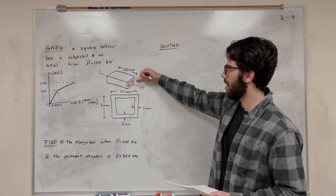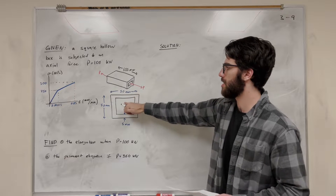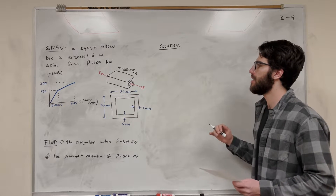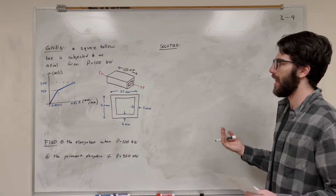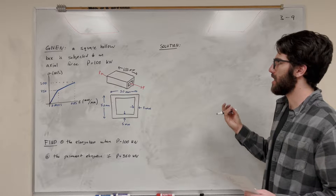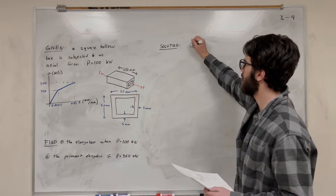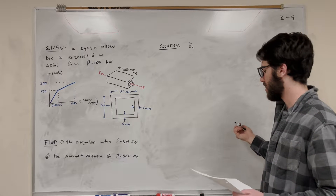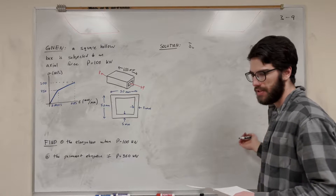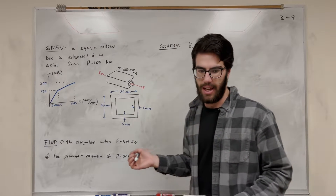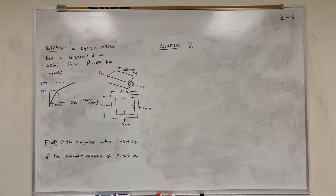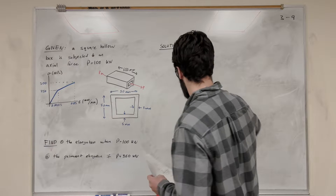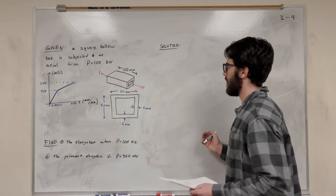I just drew this cross-section here, just so it's easier to see what's going on. So if we want to find the elongation, that's going to be delta — how much longer does it get in length? We need to find an equation for that, so let's try to derive that first.